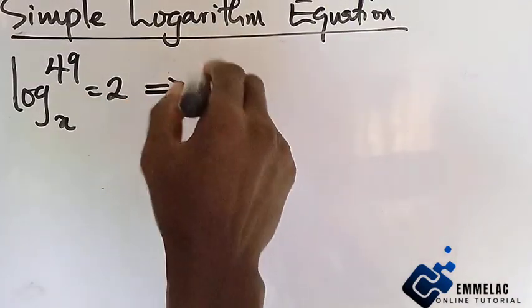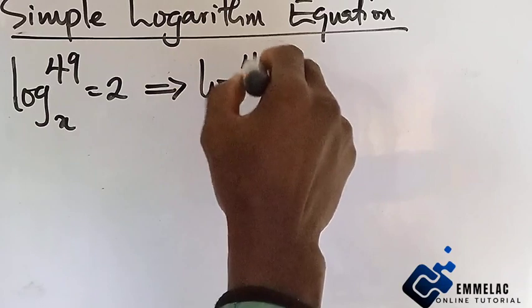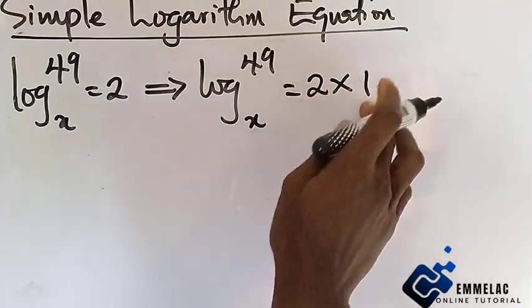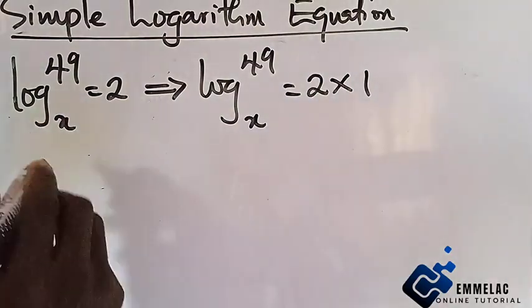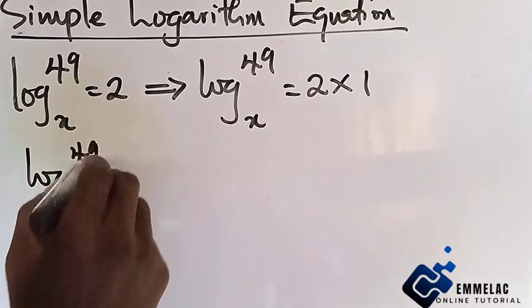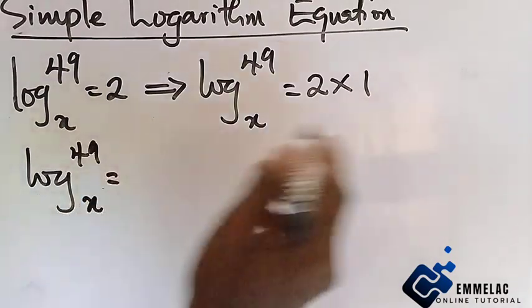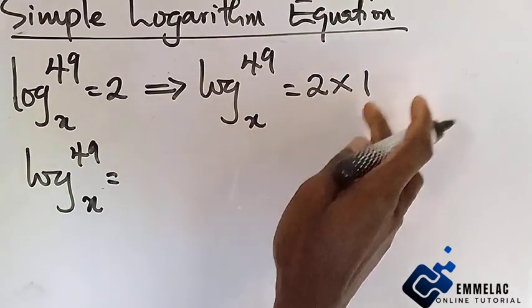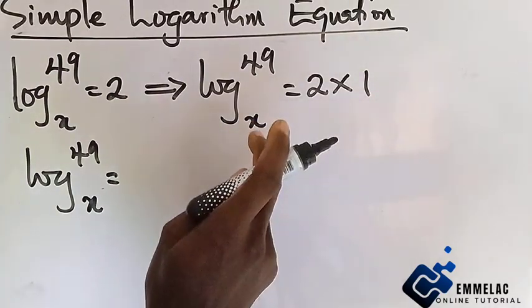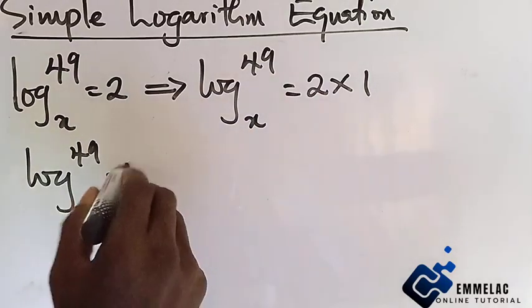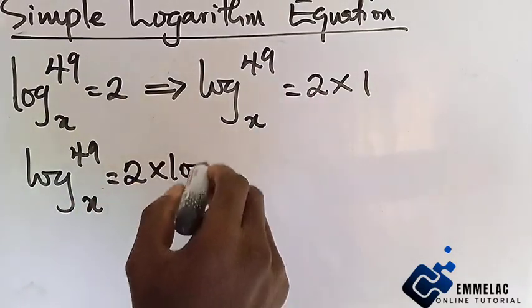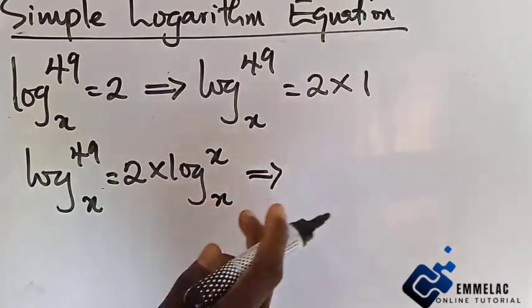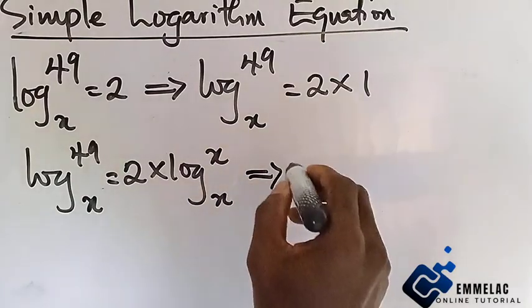So this equation then implies that log 49 base x equals 2 times 1, which gives us 2. Moving further, we can say log 49 base x equals... For us to reconcile both the left hand side and the right hand side together, this should be equated for log base x. So here we have 2 times log x base x.